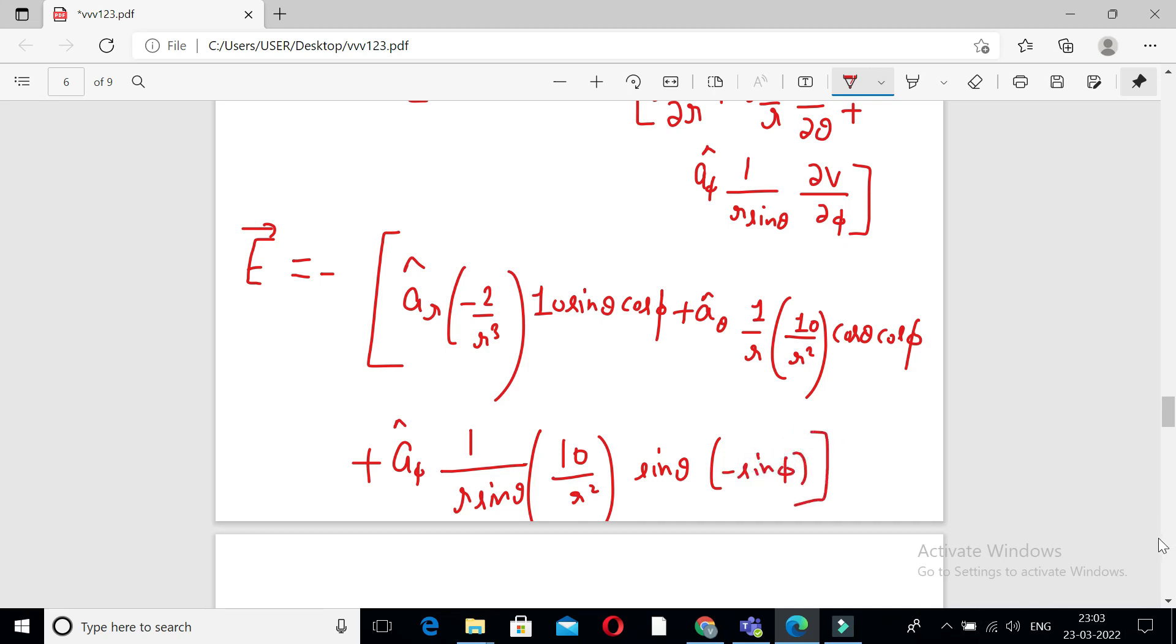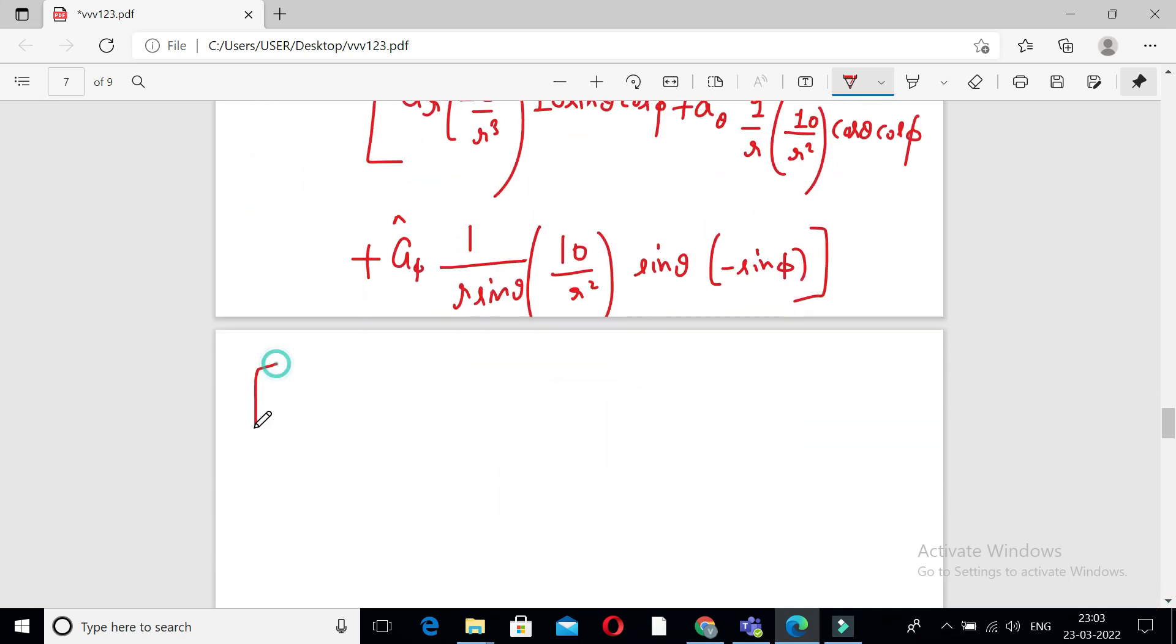So we get E vector is equal to A R cap 20 upon R cube sine theta into cosine phi minus A theta cap 10 upon R cube cosine theta cosine phi plus A phi cap 10 upon R cube sine phi. So this is the value of E.